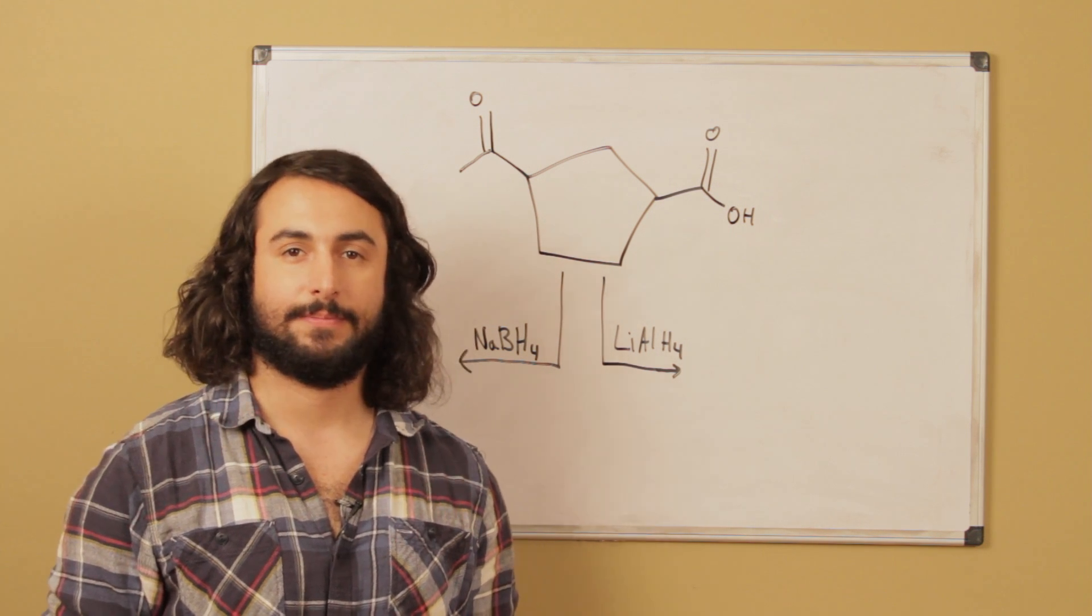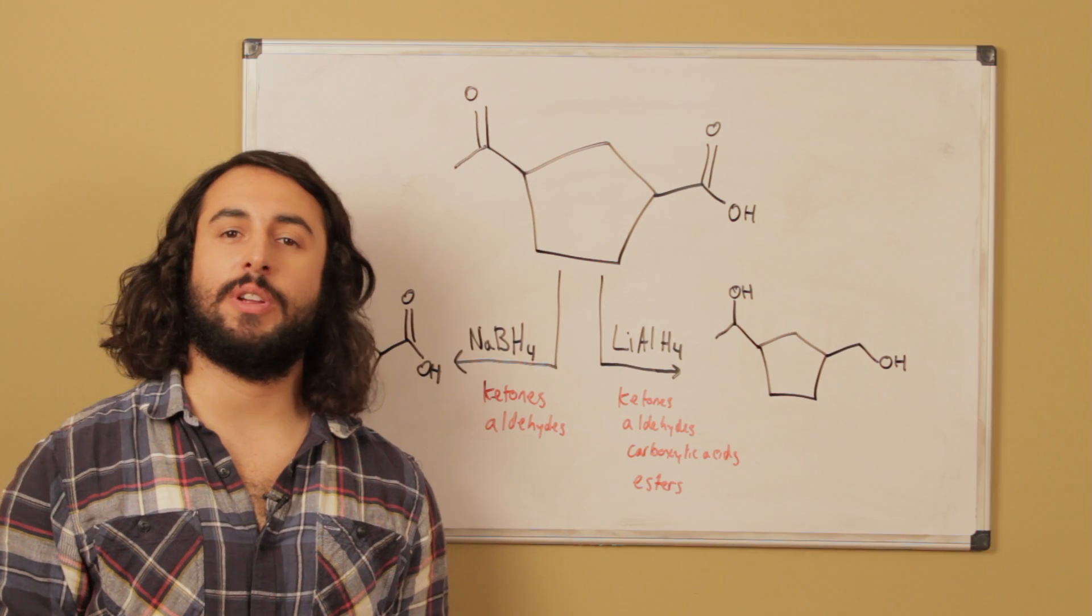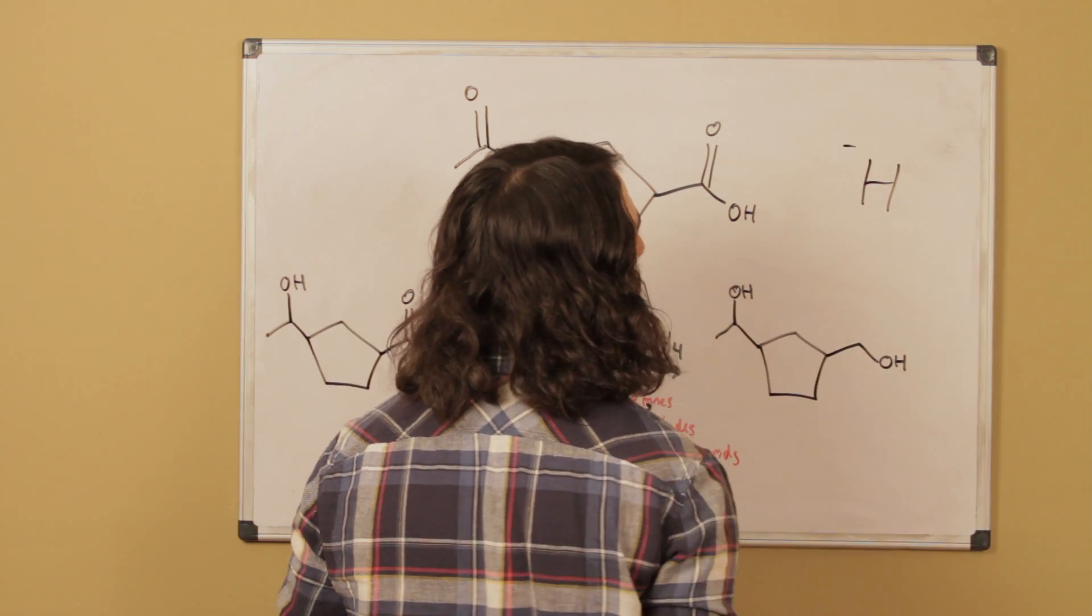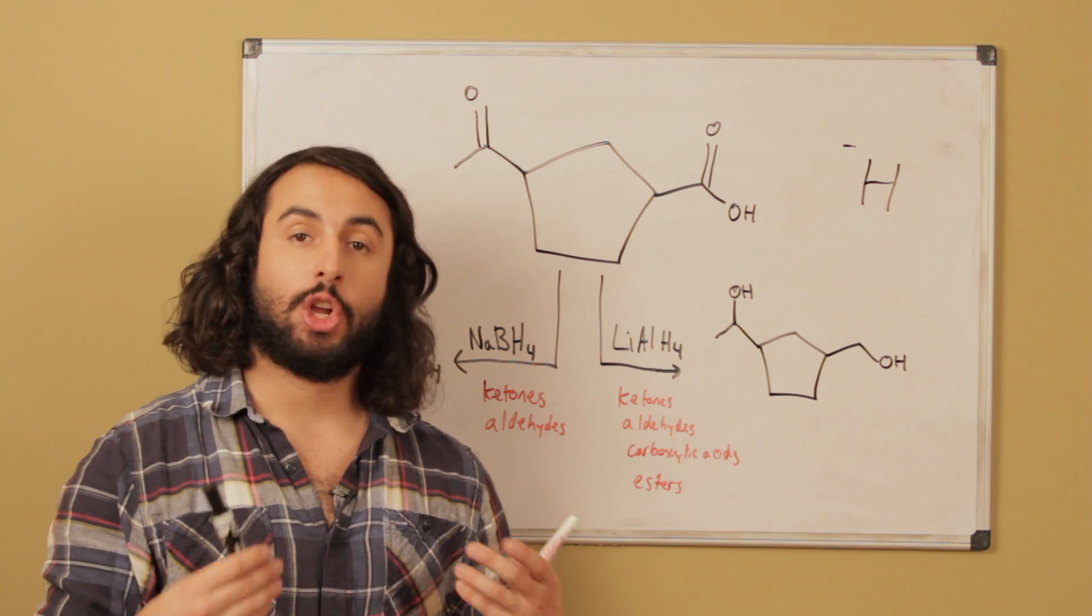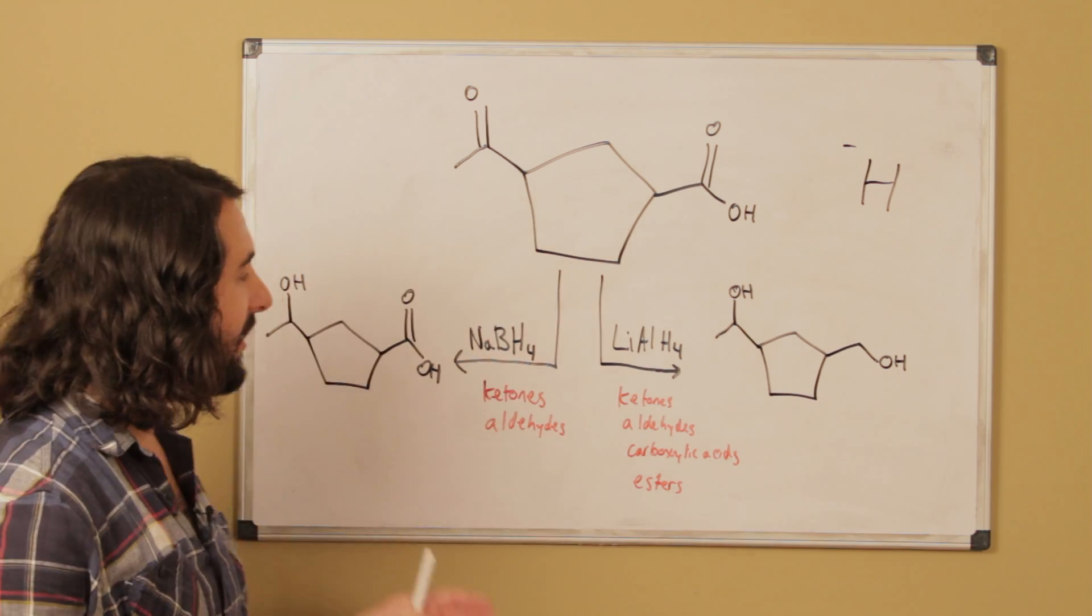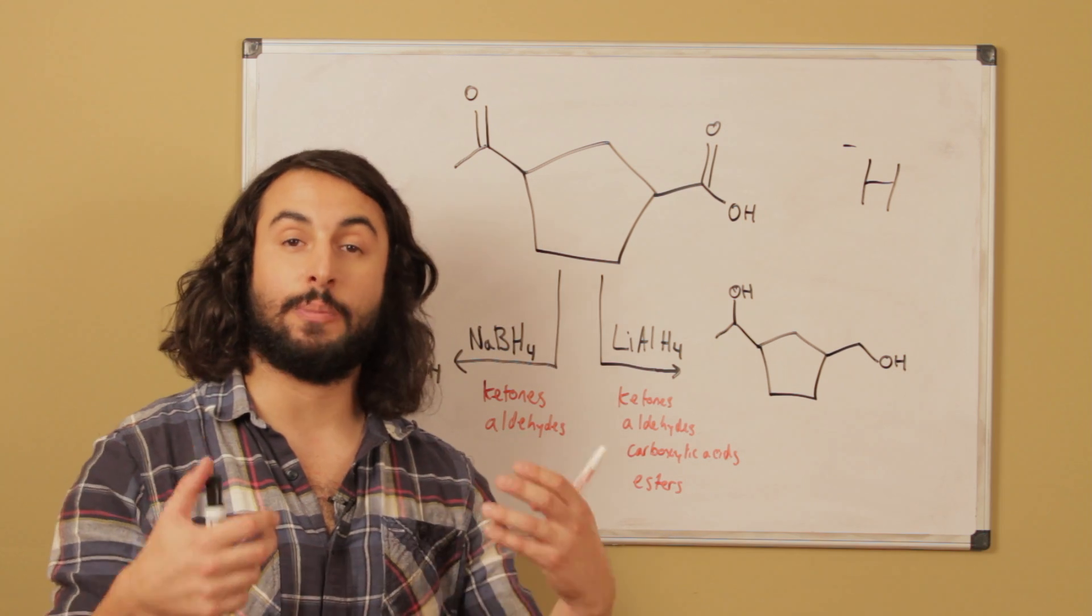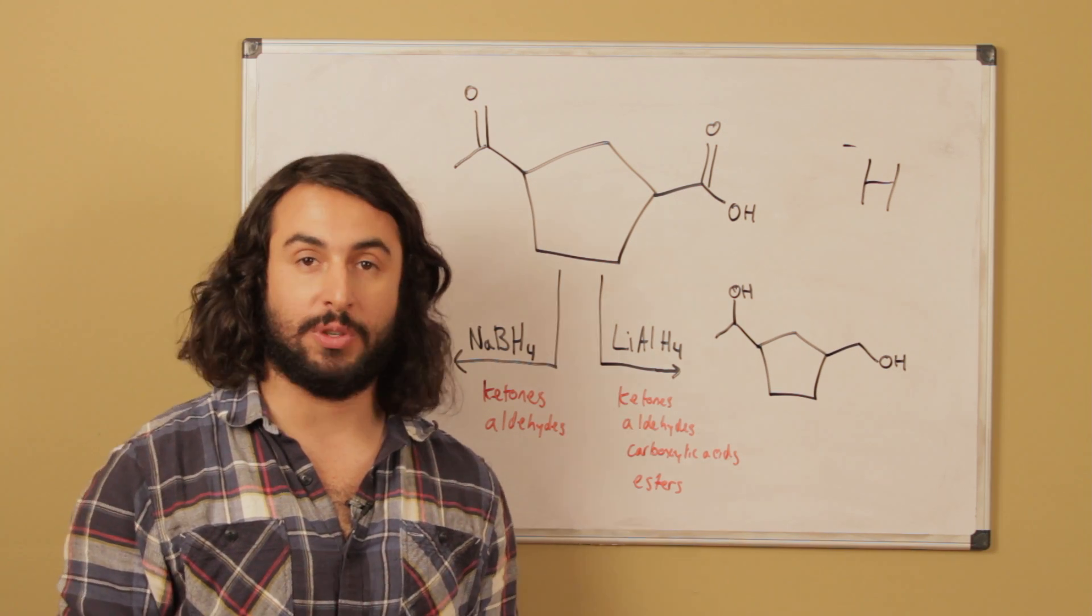Okay, so we've got our two different reducing agents here: sodium borohydride and lithium aluminum hydride. We know that those are both sources of hydride H⁻, which is going to act as a nucleophile and attack a carbonyl and reduce some carbonyl-containing compound. But the key difference here is that sodium borohydride is a soft reducing agent, it's a bit weaker, whereas lithium aluminum hydride is a hard reducing agent, it's a little bit stronger. So there's a discrepancy in what kind of carbonyl-containing compounds they are able to reduce.